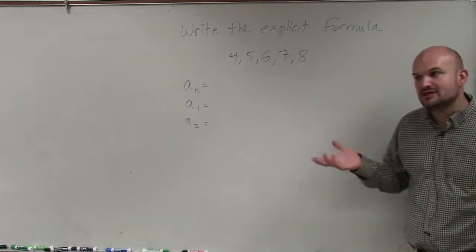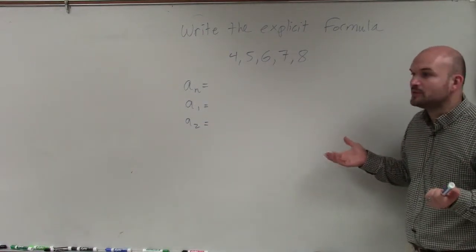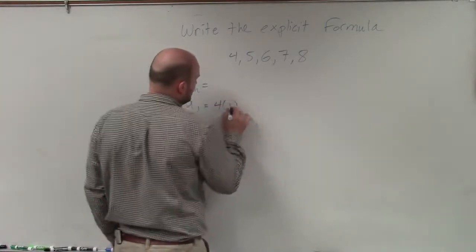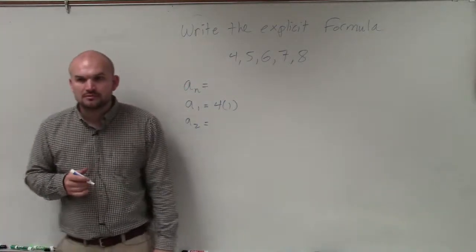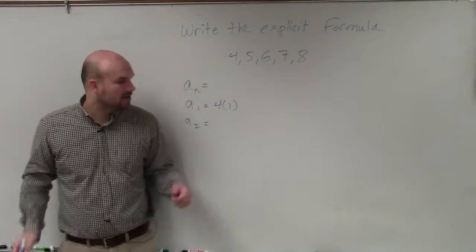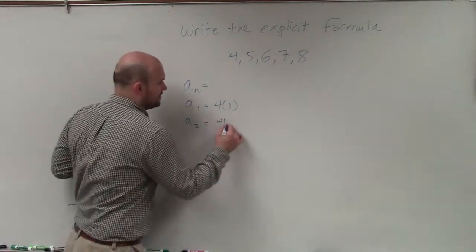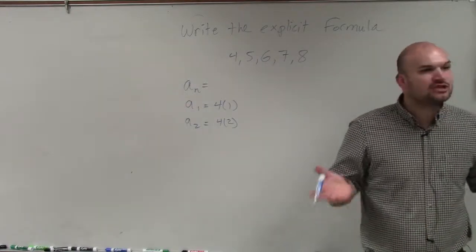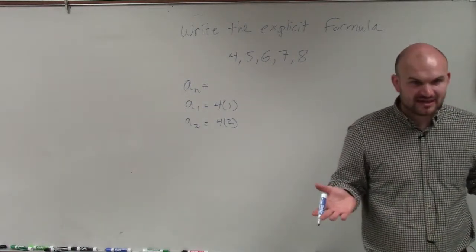So what I could do is, let's think of a number here. Could I multiply 4 times 1? Would that produce me 4? Yeah, that would work, right? But what if I did this for the next one? Does 4 times 2 give me 5? No, so guess what? Multiplying is not going to work. Does that make sense?